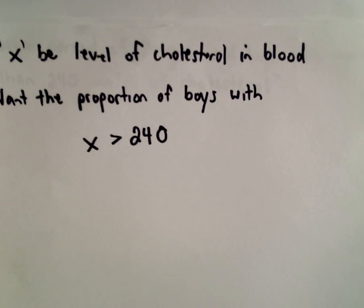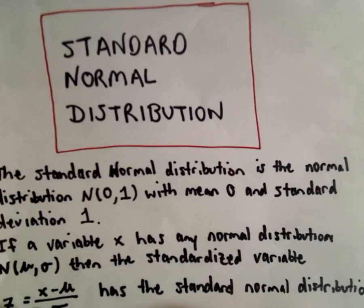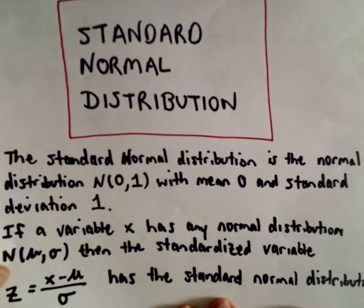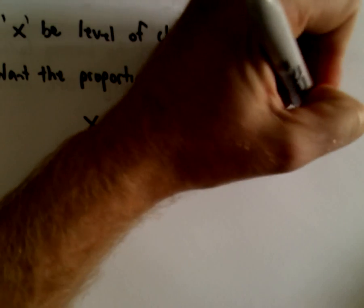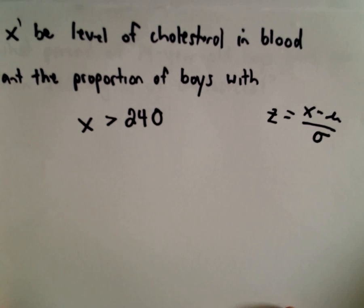We're just going to standardize this by subtracting the mean and dividing by the standard deviation. We saw that Z equals X minus μ divided by σ. That's going to be standard normal.